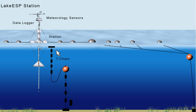PME makes each T-chain according to customer specifications. These specifications include the number and type of sensors desired and the depths at which each sensor should be placed.